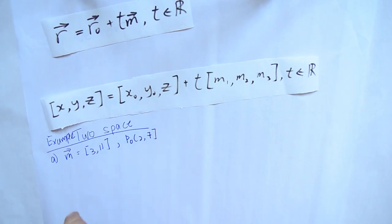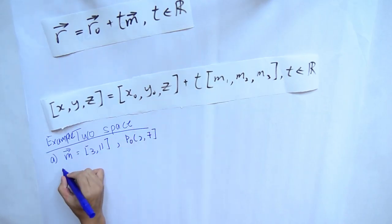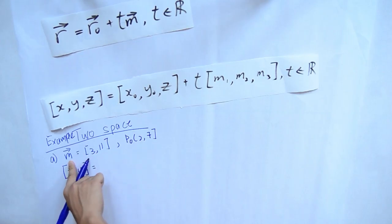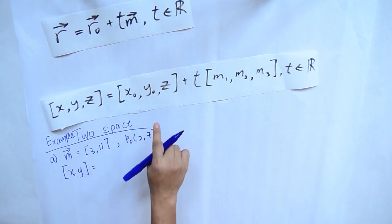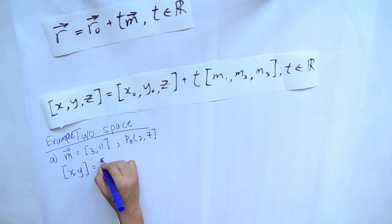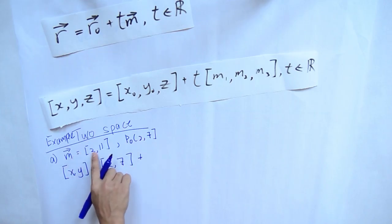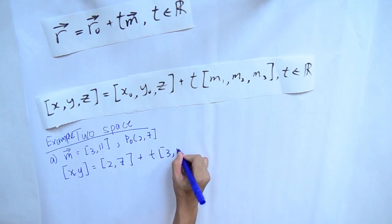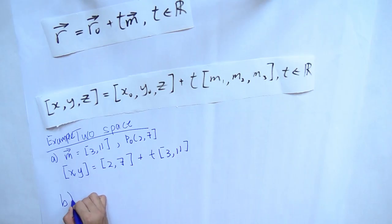This is the example of two-space. It is given that m equals bracket 3, 11 and p0 equals bracket 2, 7. We use the vector equation: bracket x, y equals bracket 2, 7 plus t bracket 3, 11.